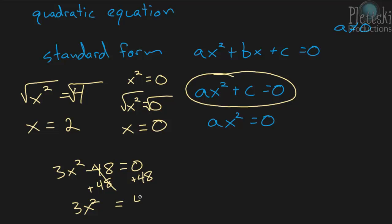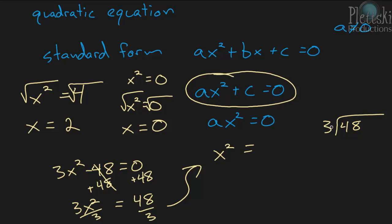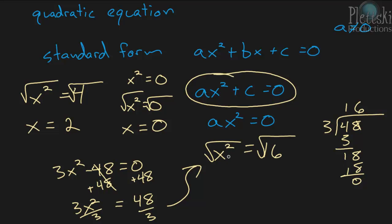Adding 48 to both sides gives us 3x squared equals 48, since negative 48 plus 48 cancels out. Now we divide both sides by 3: 3x squared divided by 3 is x squared, and 48 divided by 3 is 16. Now we can take the square root of both sides — the square root of x squared is x, and the square root of 16 is 4.